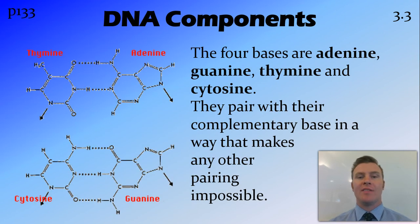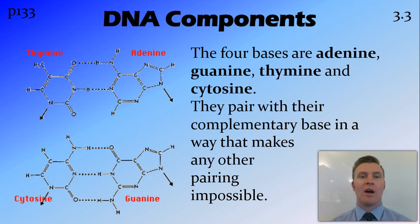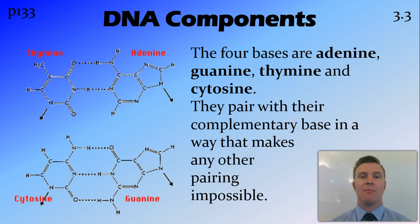We also have the four different bases: adenine, guanine, thymine, and cytosine. They can pair up with their complementary base and sit in the centre, like rungs on a ladder connected to the backbone. They only pair in a particular way — thymine with adenine, and cytosine with guanine. This is because of the hydrogen bonds that form between the two bases — the way all the functional groups sit means that's the only way they can join together.